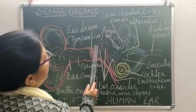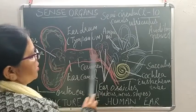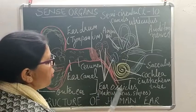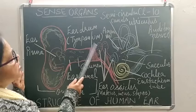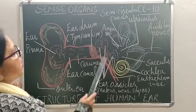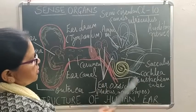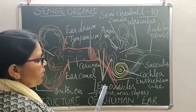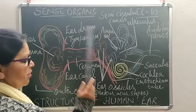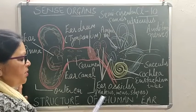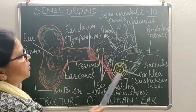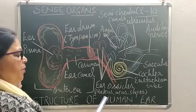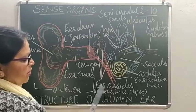Now for the middle ear — there are three small bones. Together they are called ear ossicles. Individually, the first bone is called malleus, the second is called incus, and the third is called stapes. They also have common names: malleus is hammer-shaped so it is called a hammer, incus is anvil-shaped so it is called anvil, and the third is stirrup-shaped.